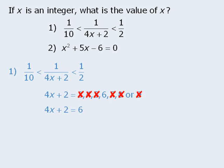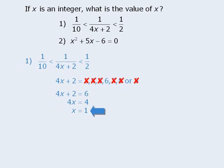However, if we let 4x plus 2 equal 6, we can solve this equation to get x equals 1. Since 1 is the only possible value for x that is an integer, x must equal 1, which means statement 1 is sufficient.